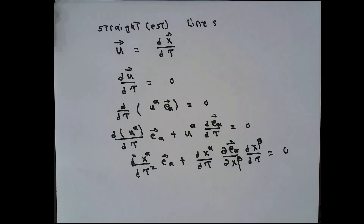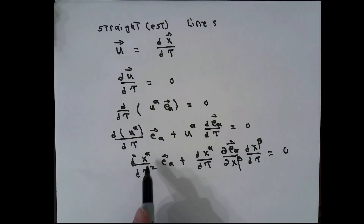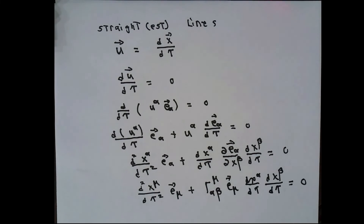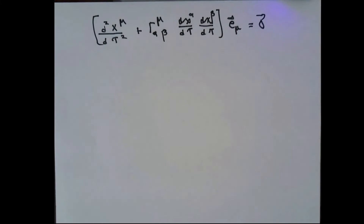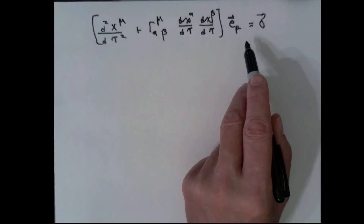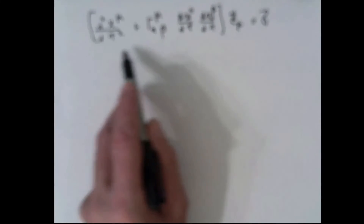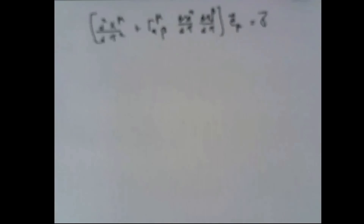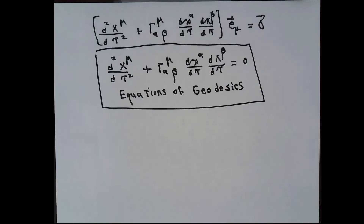The derivative of a vector with respect to a scalar is the partial derivative of that vector with respect to x number beta, multiplied by the derivative of x number beta with respect to the scalar in question, which here is tau. I'm going to re-index this so that alpha becomes mu, and I'll recall that I know what the partial of e sub alpha with respect to x beta is. Doing the usual splitting up and noting that the e vectors form a basis and are therefore linearly independent, the quantity inside the bracket has to be zero at every point of interest.